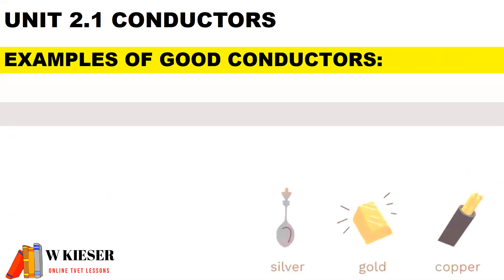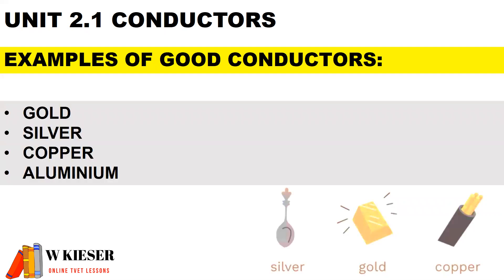Some examples of good conductors are gold, silver, copper, and aluminum.